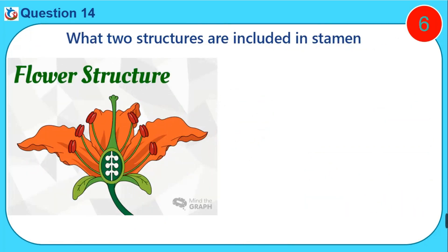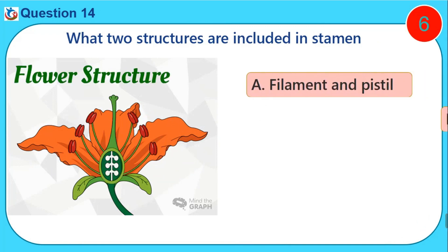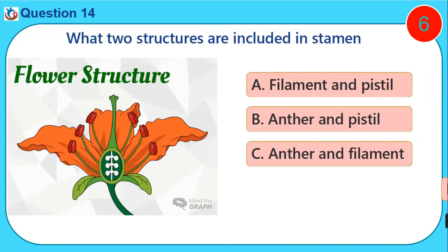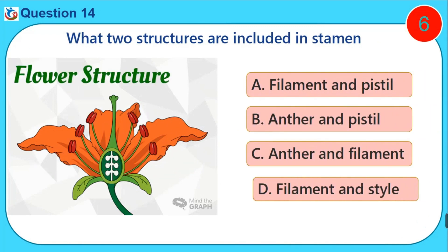What two structures are included in the stamen? A. Filament and pistil. B. Anther and pistil. C. Anther and filament. D. Filament and style.